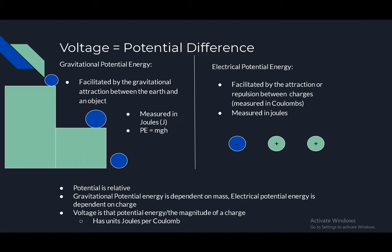Potential is relative. Gravitational potential energy is dependent on mass. Electrical potential energy is dependent on charge. Voltage is that potential energy divided by the magnitude of a charge. It has a unit of joules per coulomb.